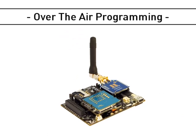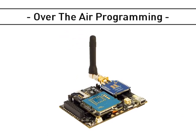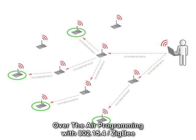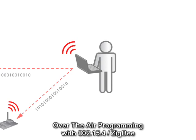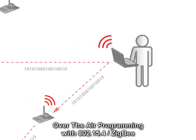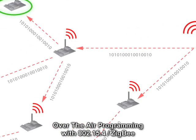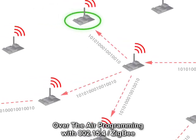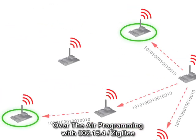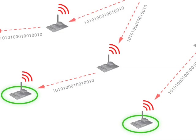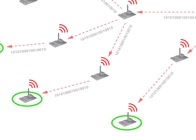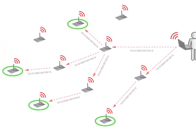Over-the-Air Programming, also known as OTA, allows us to reprogram wirelessly the nodes of our wireless sensor network using the protocols 802.15.4 and Zigbee. With this technology developed by Lavellium, we can upgrade and change the firmware version of the motes without the need for physical access.